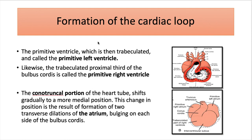The primitive ventricle, which is trabeculated, is called the primitive left ventricle. Likewise, the trabeculated proximal third of the bulbus cordis is called the primitive right ventricle. The primitive ventricle will form the primitive left ventricle, while the proximal third of the bulbus cordis will form the primitive right ventricle. The conotruncal portion shifts gradually to a more medial position. This change in position results in the formation of two transverse dilatations of the atrium, bulging on each side of the bulbus cordis, which will separate the common atrium into the left and right atria.